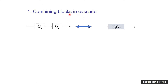If the blocks are in series, consider G1 and G2 as two blocks connected in series. The resultant block will be the multiplication of these two transfer functions. G1 is the transfer function of the first block and G2 is the transfer function of the second block. Therefore it can be reduced into a single block having transfer function G1 times G2.